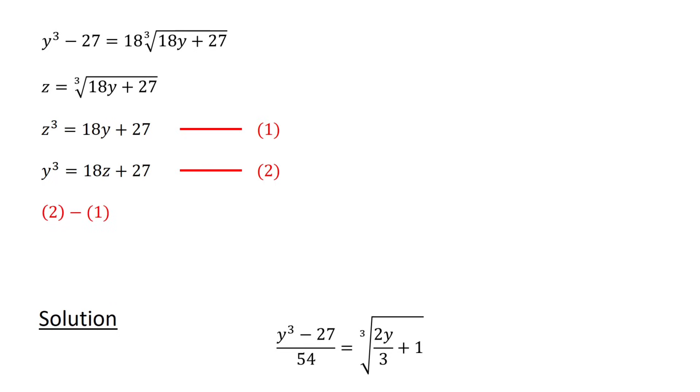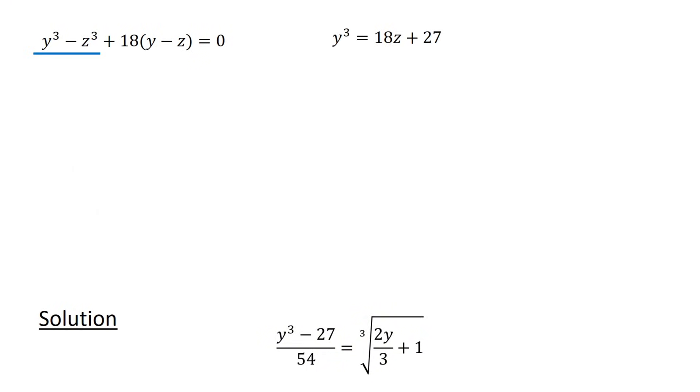Following this, we subtract equation 1 from equation 2 to obtain y cubed minus z cubed equals 18z plus 27 minus 18y minus 27, or y cubed minus z cubed plus 18 times y minus z equals 0. Next, we factorize y cubed minus z cubed to obtain y minus z times y squared plus yz plus z squared plus 18 times y minus z equals 0. The left-hand side thus factorizes as y minus z times y squared plus yz plus z squared plus 18.